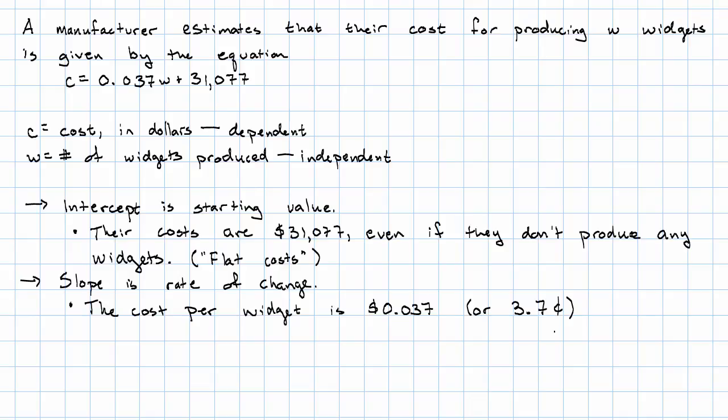The slope is the rate of change. It's the cost per widget. The intercept is the starting value. It's the cost that I have, even if they don't produce any widgets at all. There we go.